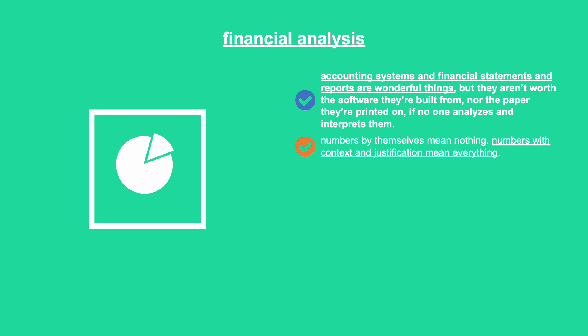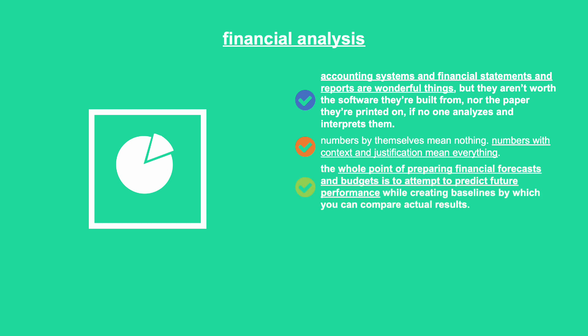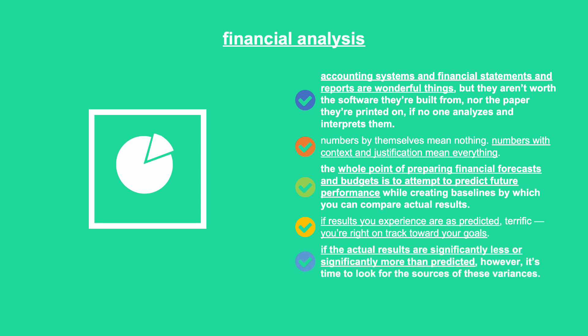The whole point of preparing financial forecasts and budgets is to attempt to predict future performance while creating baselines by which you can compare actual results. If results are as predicted, terrific — you're right on track toward your goals. If actual results are significantly less or more than predicted, it's time to look for the sources of these variances.